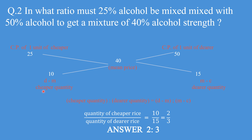D minus M, which is the cheaper quantity, comes out to be 50 minus 40 which is 10. The dearer quantity is 40 minus 25 which is 15. Putting the values into our standard ratio form: quantity of cheaper commodity upon quantity of dearer commodity is 10 upon 15, which comes out to be 2 is to 3. The answer is 2 is to 3.